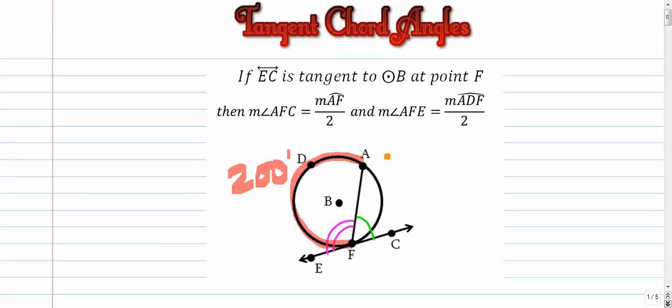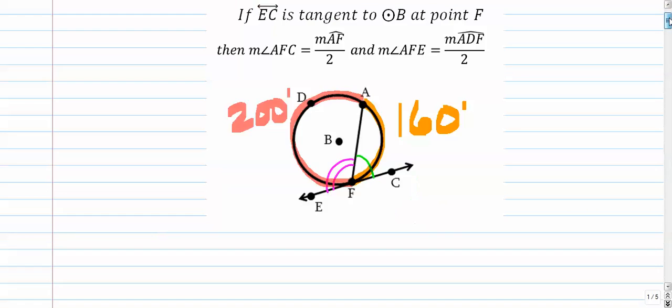Alright, so think about that for a second. We've got this arc is 160. This arc is 200. Together, they add up to a whole circle. So a lot of really cool things happening here.